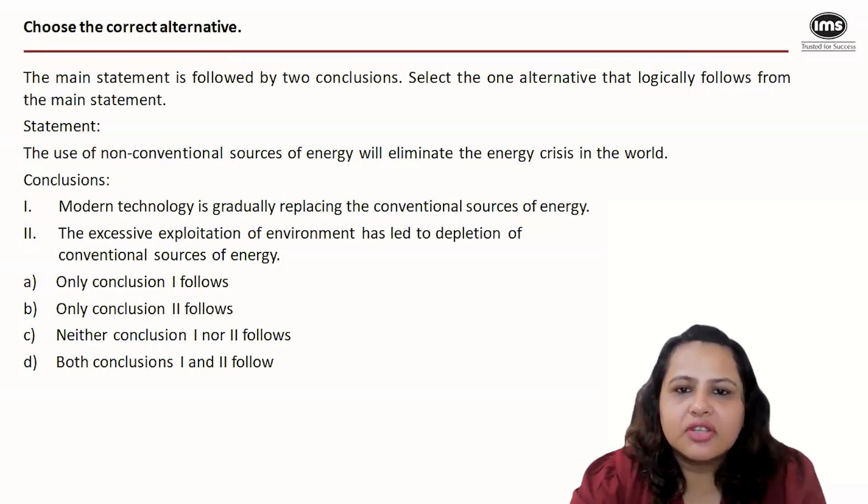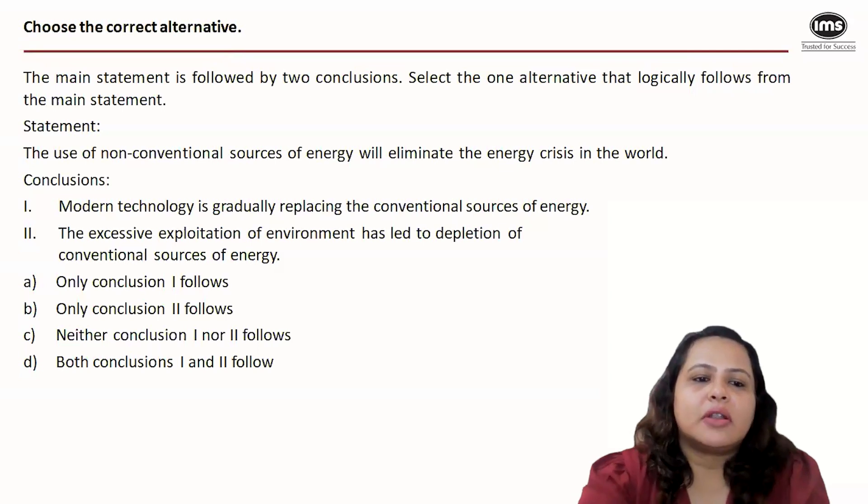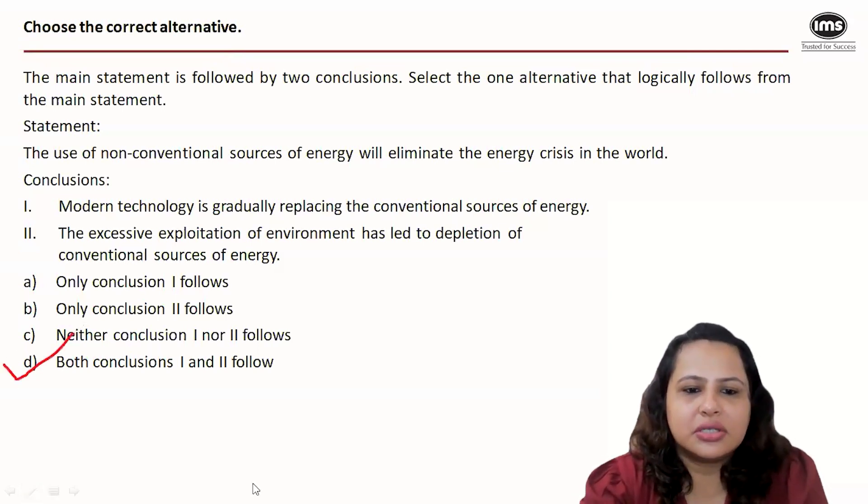When we say that conventional sources of energy cannot meet the energy requirement, it means we have exploited them, leading to depletion of conventional sources. So the correct answer to this question is option D: Both conclusions I and II follow.